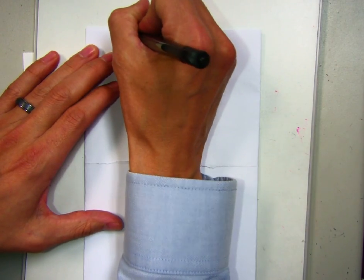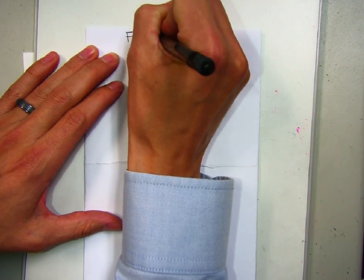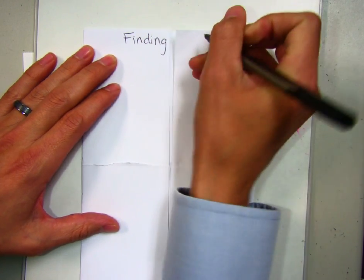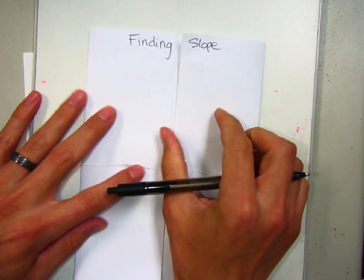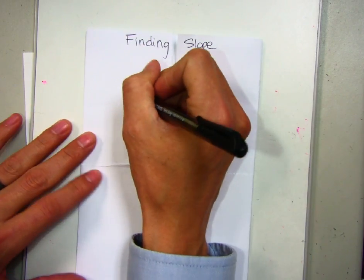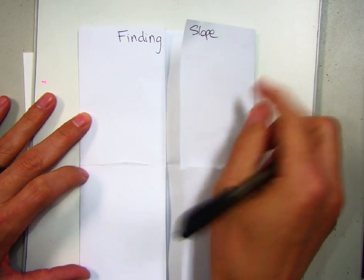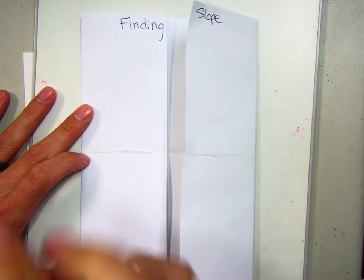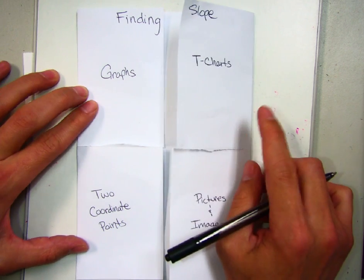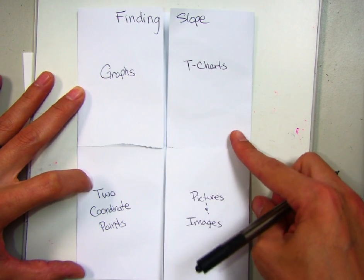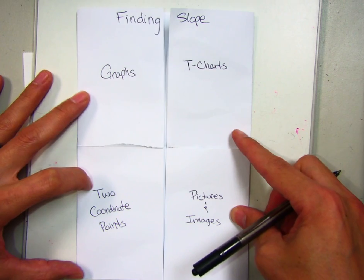At the top I'm going to write the words finding slope. Finding, I'm going to put on the left-hand side and then slope on the right-hand side of the two little flaps here. I'm going to go ahead and write all four things down. I took a moment to write down all four. That's graphs, T charts, two coordinate points, and pictures or images.